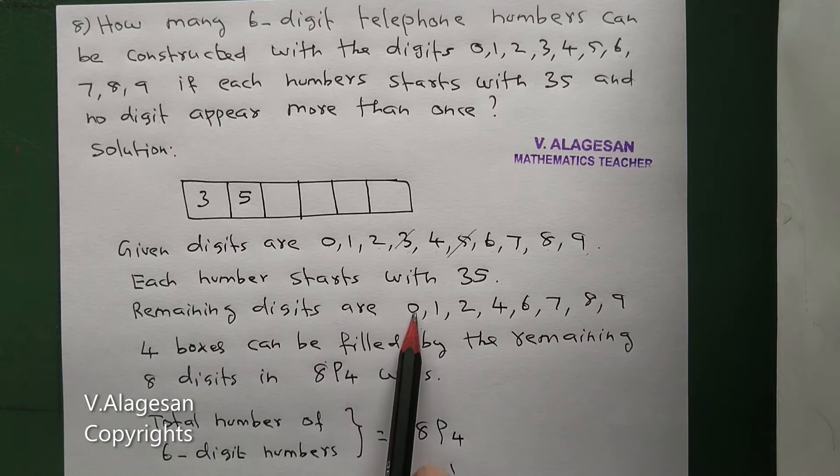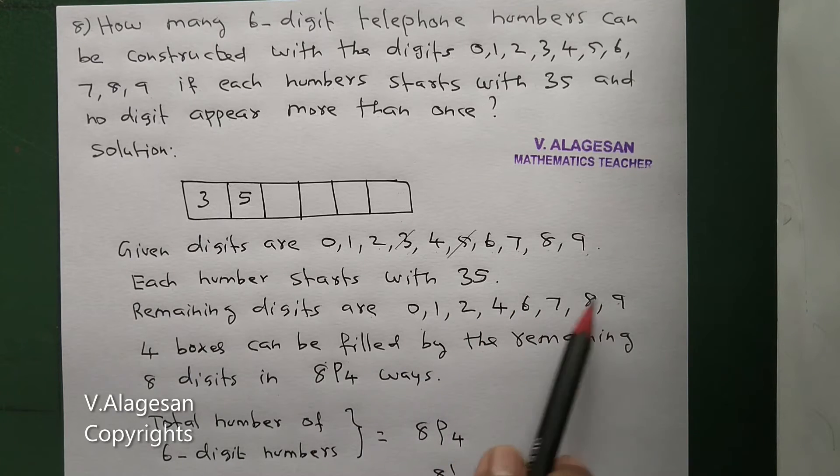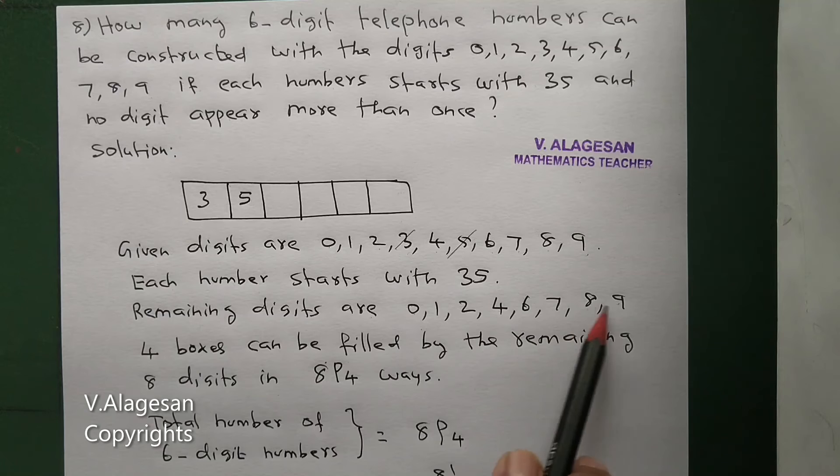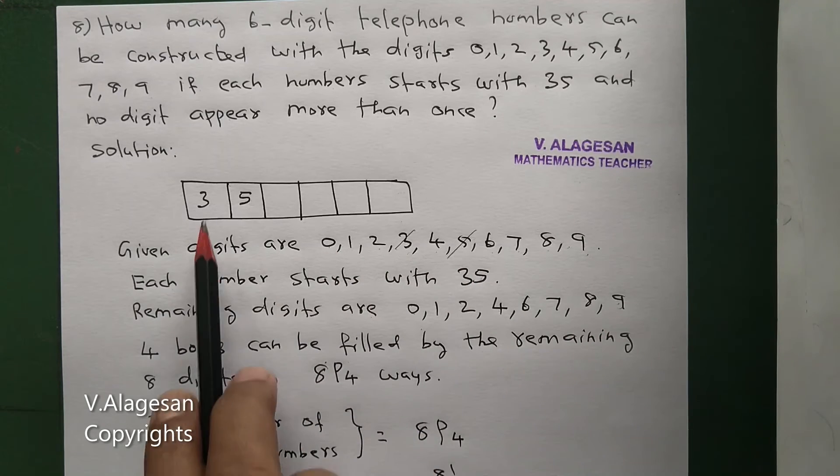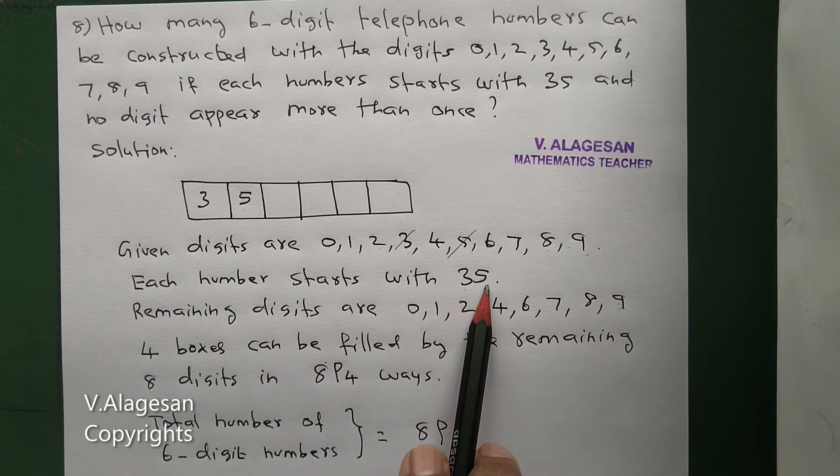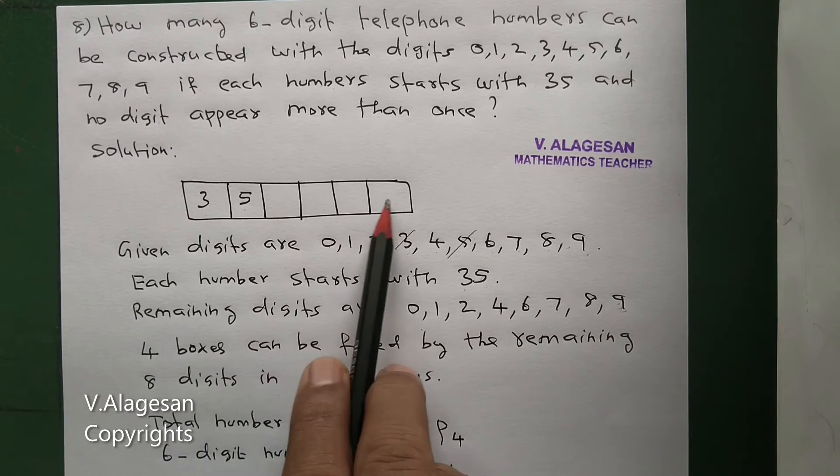The remaining digits are 0, 1, 2, 4, 6, 7, 8, 9. 3 and 5 are used. So, remaining digits are 8 in total, and 4 boxes remain.